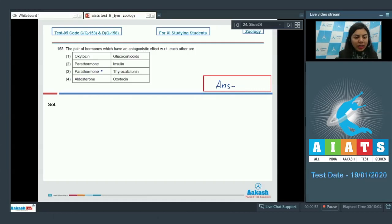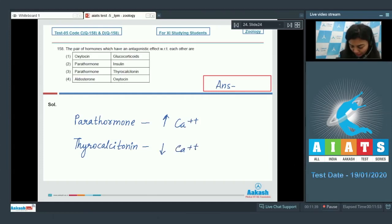Option number two, parathormone is linked to calcium and phosphate metabolism whereas insulin is related to glucose utilization. Let's look at option three, parathormone and thyrocalcitonin. Parathormone is released in response to lowered calcium levels in the body and the main function is to restore the calcium levels by increasing its levels in the body when it's less. Whereas thyrocalcitonin have an opposite effect with respect to the regulation of calcium ions. It decreases the blood calcium levels. Thus we can see that these two hormones are antagonistic in nature. The correct answer is option three.